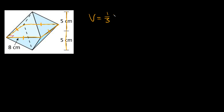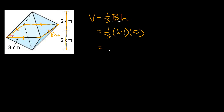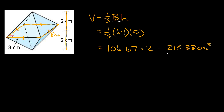Let's find the volume of the top pyramid. The volume of a pyramid is equal to one-third the area of the base times the height. The base is a square: 8 times 8 is 64, so the area of the base is 64. The height of one pyramid is 5 centimeters. Multiplying this out gives approximately 106.67. We just double this to get the volume of both pyramids: 106.67 times 2 equals 213.33 centimeters cubed.